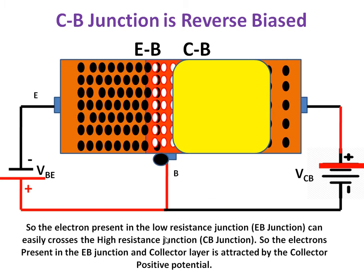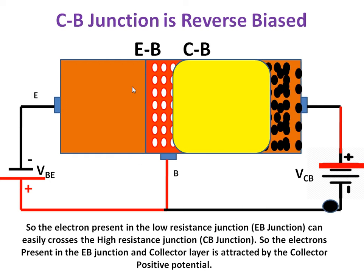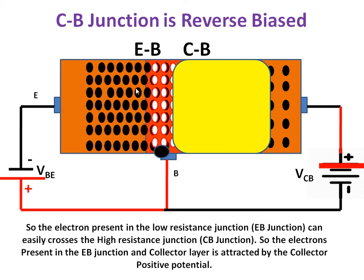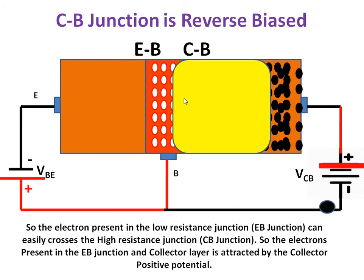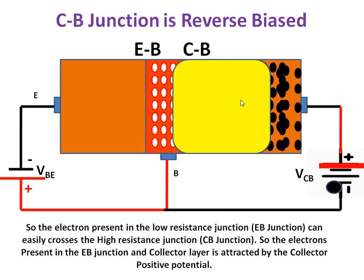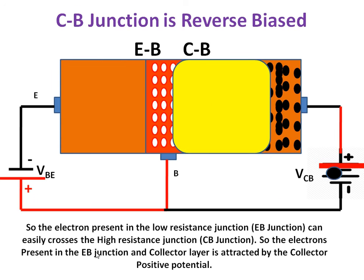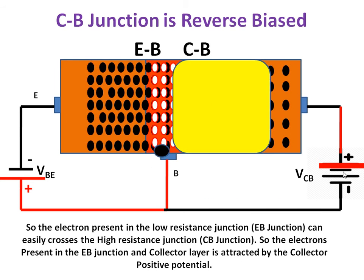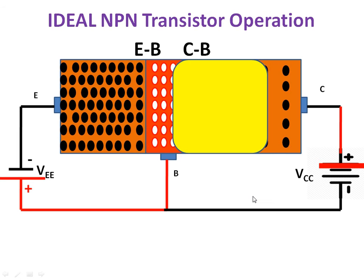The electrons present in the low-resistance forward-biased emitter-base junction can easily cross the high-resistance collector-base junction, where the depletion layer width is very large. The electrons in the EB junction and emitter layer are attracted by the collector's positive potential.